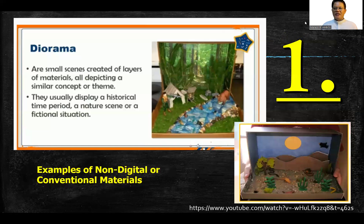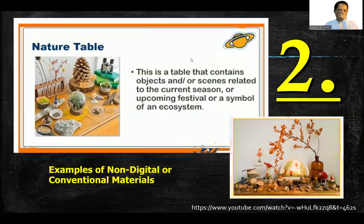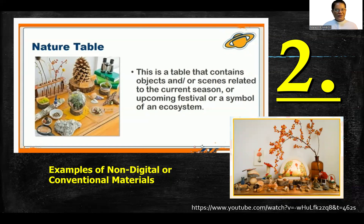The first example is the diorama. Dioramas are small scenes created from layers of materials, all depicting a similar concept or theme. They usually display a historical time period, a nature scene, or a fictional situation. You have likely seen dioramas since elementary grade. The second is the nature table — a table containing objects and scenes related to the current season, an upcoming festival, or an ecosystem. Take a look; it's very nice.